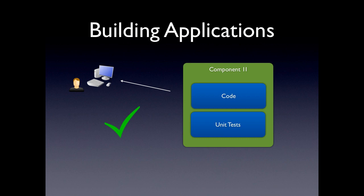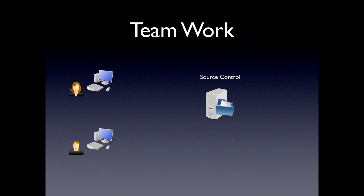The problem is, however, that software systems aren't composed of individual and isolated components, but they are composed of components that normally have to work together. When we're doing teamwork, we often have source control, and we have different members of the team working and checking in their code to source control. In principle, if everything is done correctly, all is good. The first person checks in the code, the second person checks out code, and everyone can continue to work in a normal way.